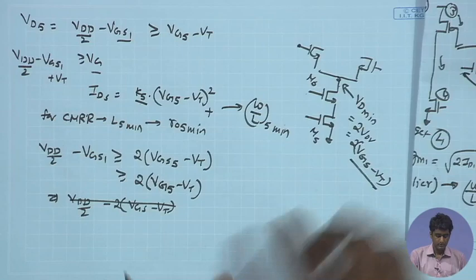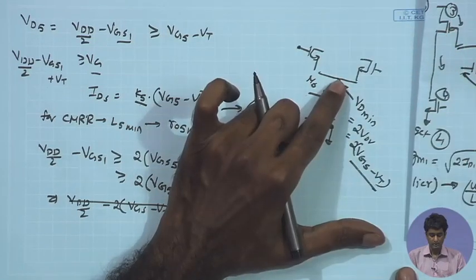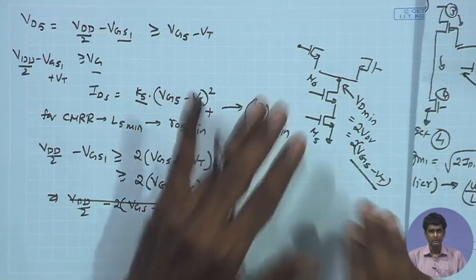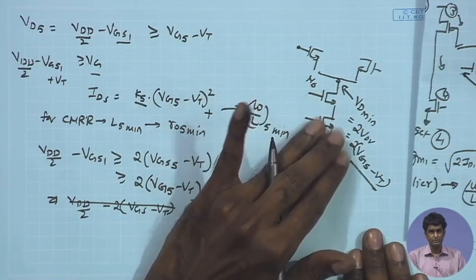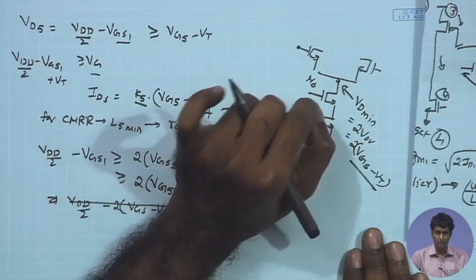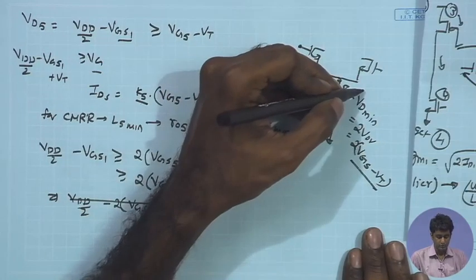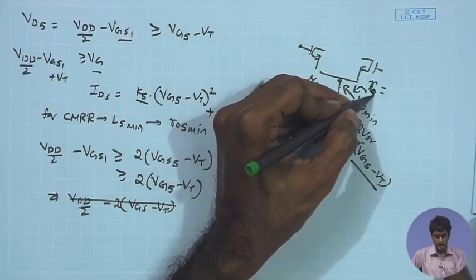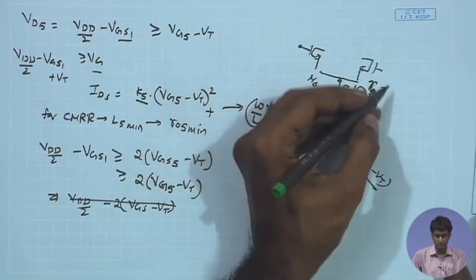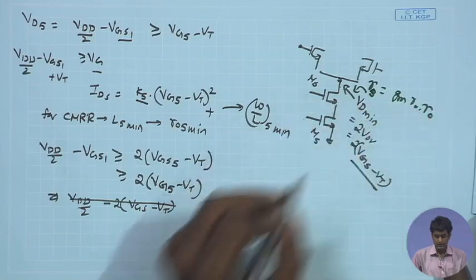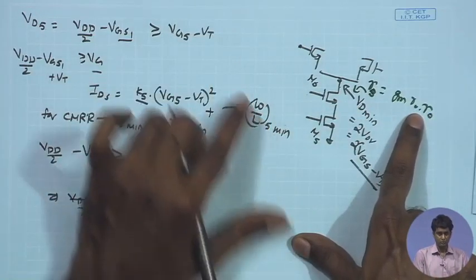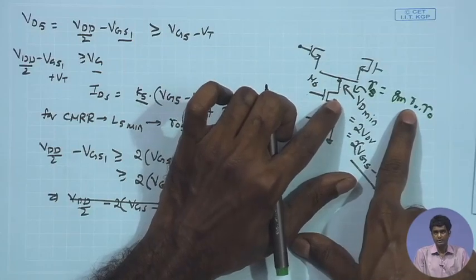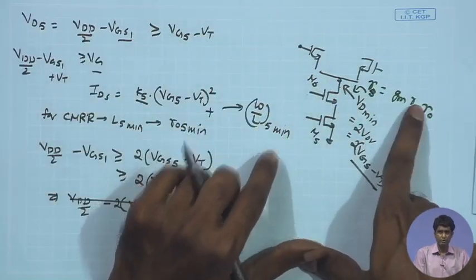With the cascode, the CMRR issue is much better addressed because we are no longer relying only on channel length or ro. The output resistance looking into this node is gm·ro·ro, so the overall impedance is gm·ro times ro. As a result, I am not relying solely on increasing channel length. Although the overdrive voltage is larger, I can afford a smaller channel length because I have the gm·ro factor, which can be quite large.